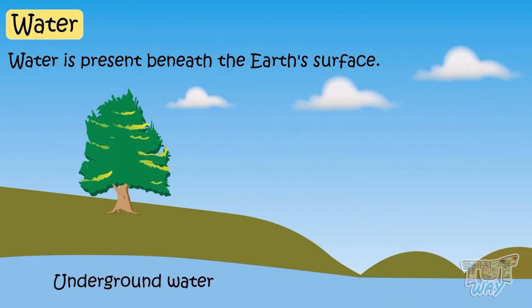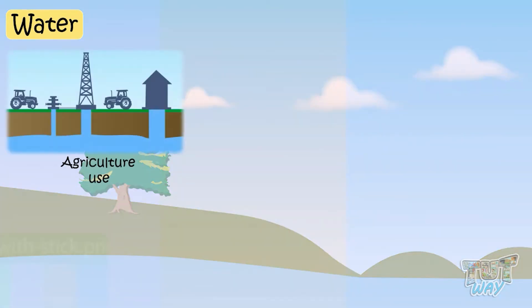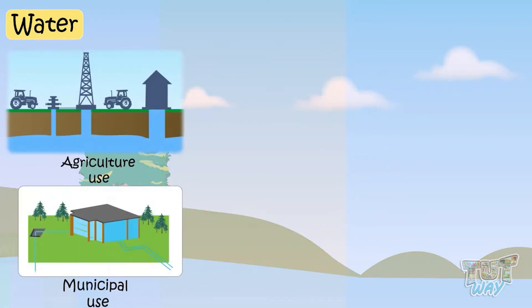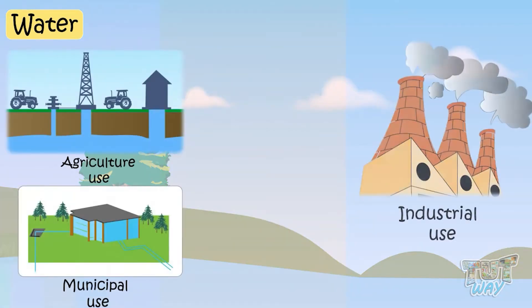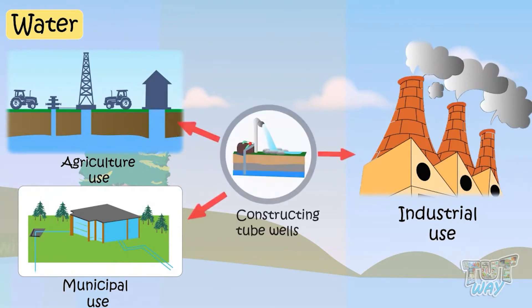Underground water is often used for agricultural, municipal, and industrial use by constructing tube wells.